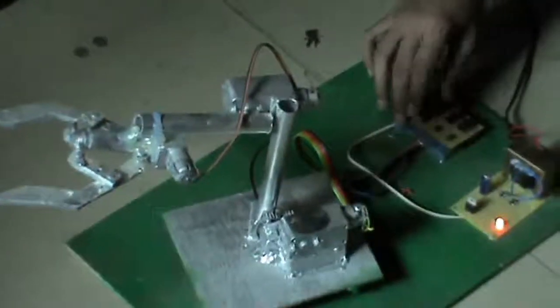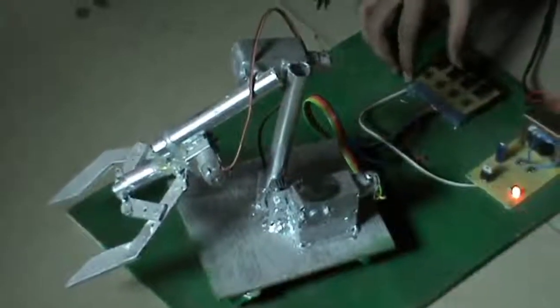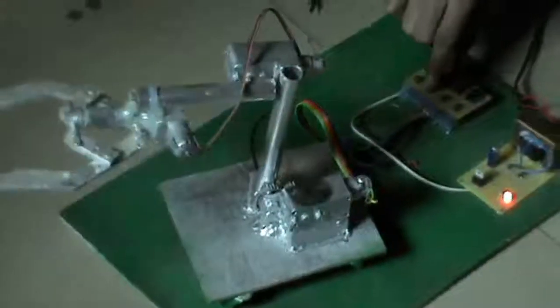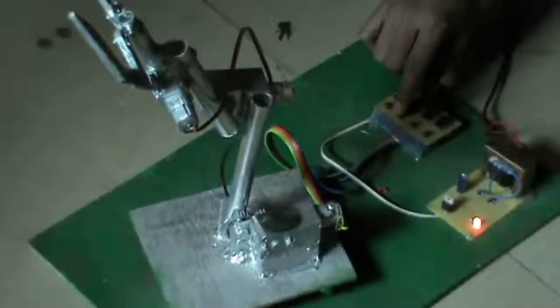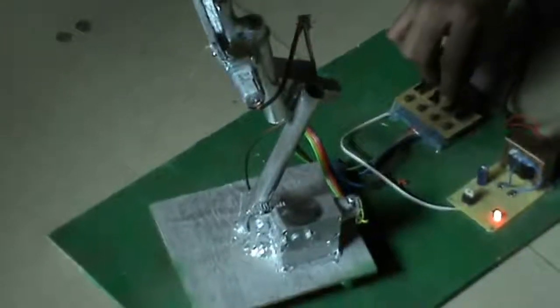For the upper part of the arm, this is the switch. It brings it downward. We'll toggle the switch. Now it will move it upwards as you can see. So let us bring the lower part of the arm downwards. There it goes as you can see.